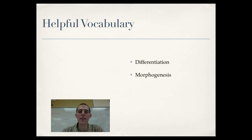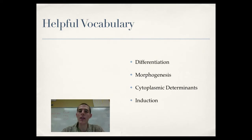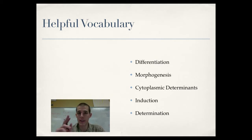Morphogenesis is the process of actually developing a form. In differentiation, cells would say they're going to be a heart or a brain, while morphogenesis is where the cell actually becomes a heart or becomes a brain. Cytoplasmic determinants are signals in the cytoplasm that help determine what cell is going to be what. Induction is one cell influencing another cell and helping it decide what it's going to become — kind of like peer pressure. And finally, determination is kind of like the end of the line. Once a cell has been determined, it is set to become whatever it has been determined to become.